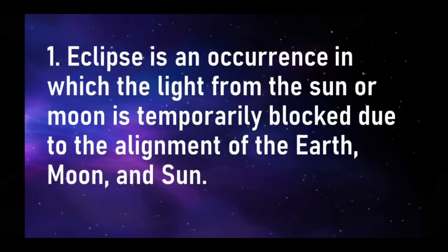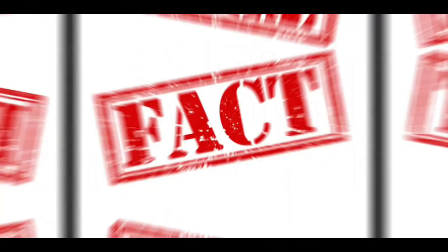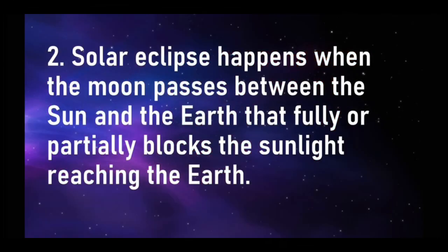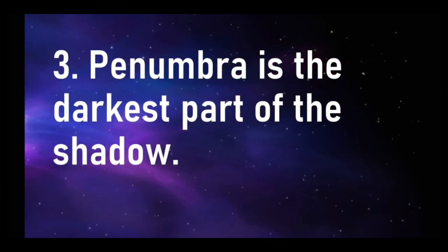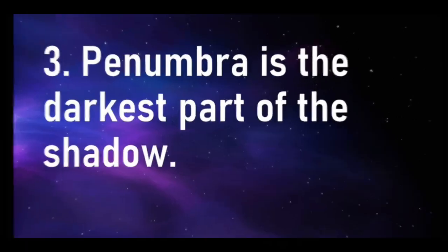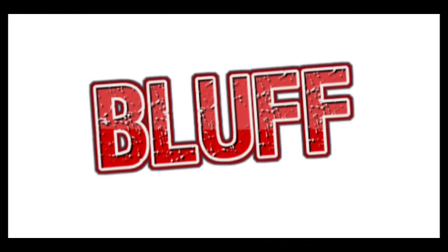Question number one: Eclipse is an occurrence in which the light from the sun or moon is temporarily blocked due to the alignment of the earth, moon, and sun. Is it a fact or a bluff? Correct, that is a fact. Question number three: Penumbra is the darkest part of the shadow. Is it a fact or a bluff? Very good, that is a bluff — because that is the umbra.